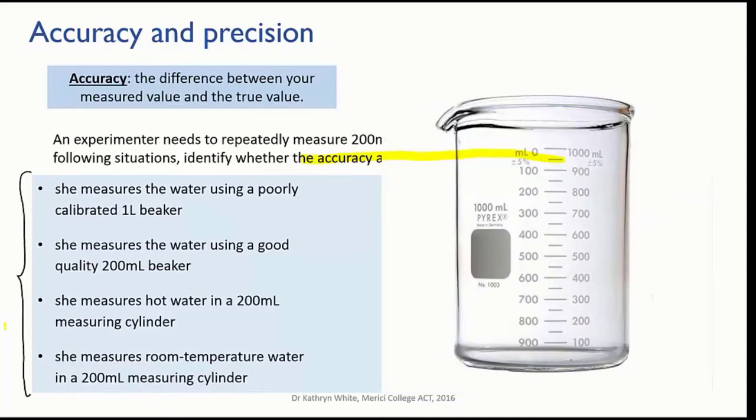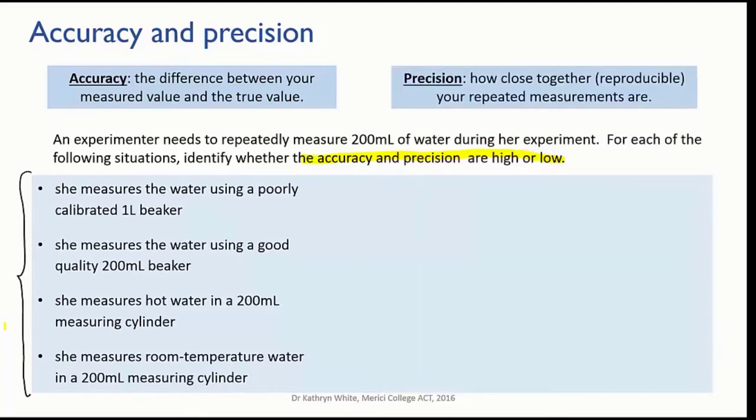Measuring 200 mils in a 1 litre beaker is difficult because the gradations are far apart, and the beaker is so wide that small differences in the height of the water translate to a large difference in the volume. Sometimes the volumes will be a bit above the 200 mil mark, and sometimes they'll be below. So that means a large random error, and hence the precision is going to be low.